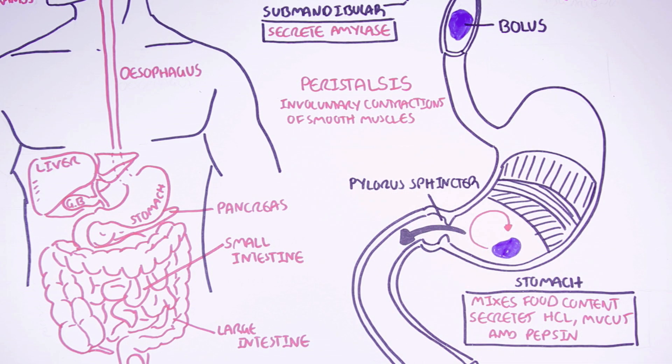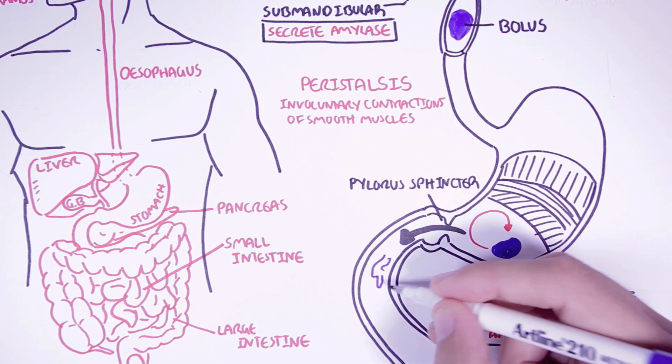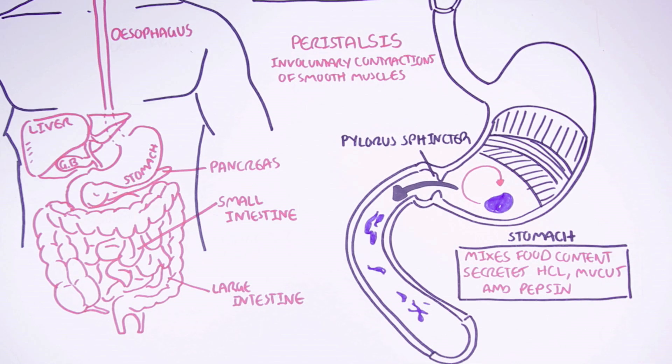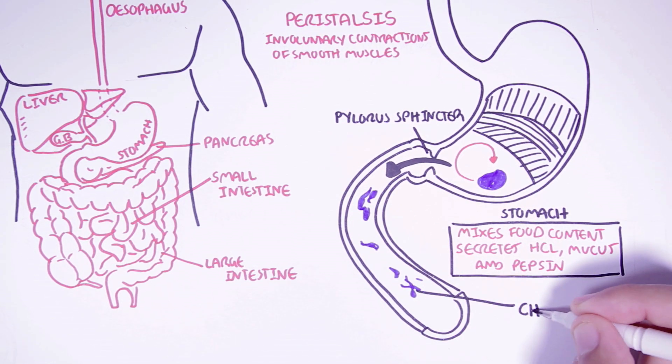The pyloric sphincter is the barrier between the stomach and the small intestine. During digestion, the pyloric sphincter opens in phases allowing the liquified food, now referred to as chyme, to enter the small intestine. Now chyme is the term used to describe a semi-fluid mass of partially digested food. So essentially, before the stomach, the food was referred to as bolus. After the stomach, it is chyme.